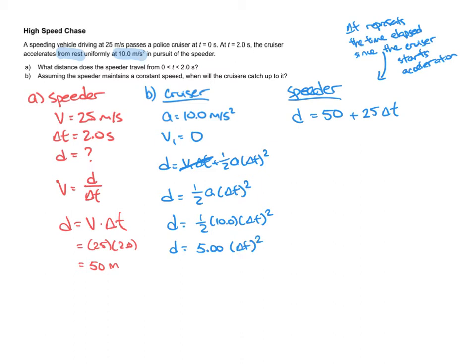All right, so what I've done is I've come up with two expressions. One gives the position of the speeder and one gives the position of the cruiser. And what I want to do is find out when these two positions are equal to each other, because that's when the cruiser catches up to it. So what I end up doing is I set these equations equal to each other. So let me just number them 1 and 2. And I'm going to say set equation 1 equal to equation 2.